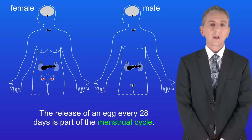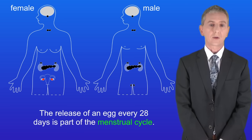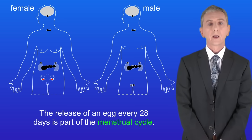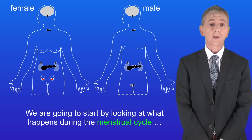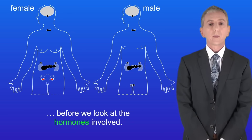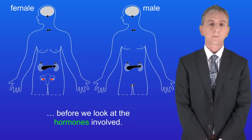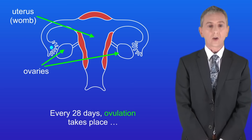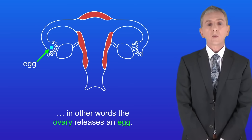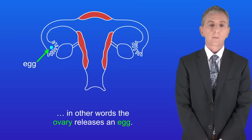The release of an egg every 28 days is part of the menstrual cycle. We're going to start by looking at what happens during the menstrual cycle before we look at the hormones involved. Every 28 days ovulation takes place — in other words the ovary releases an egg.